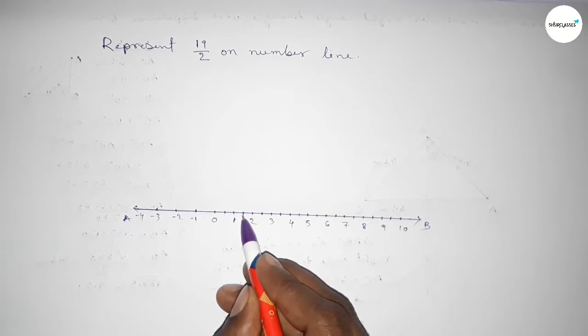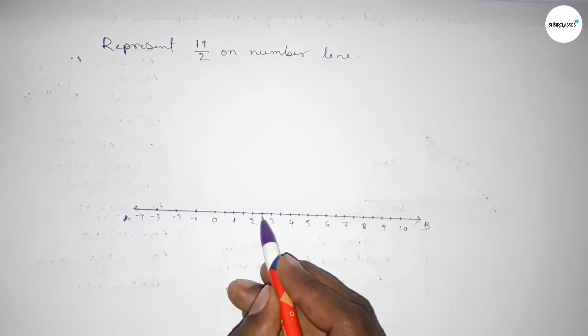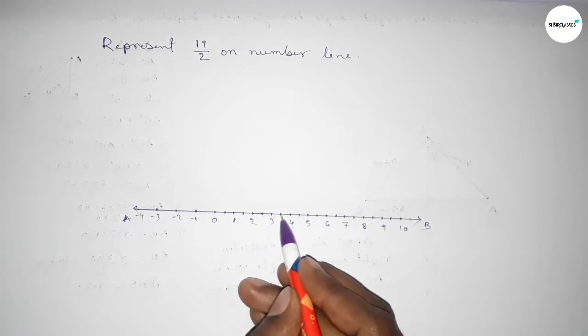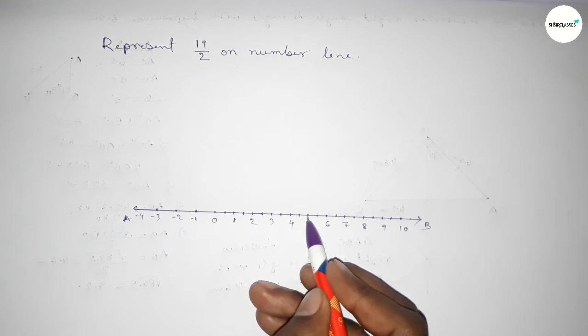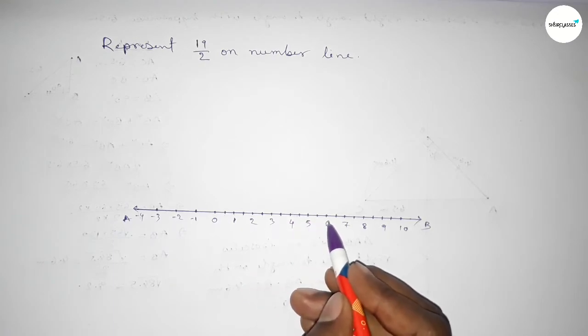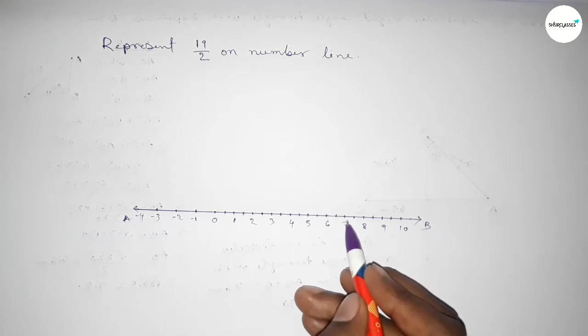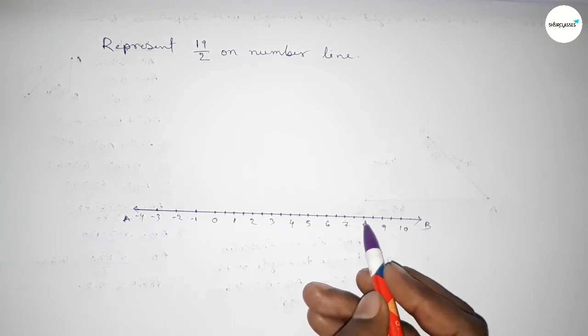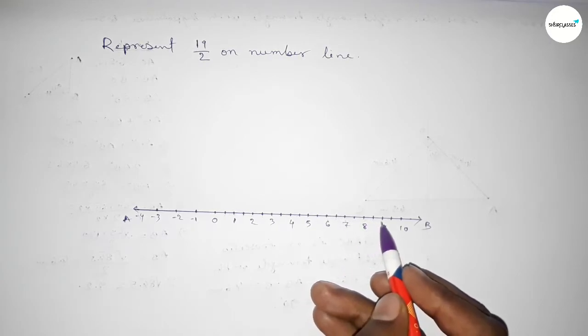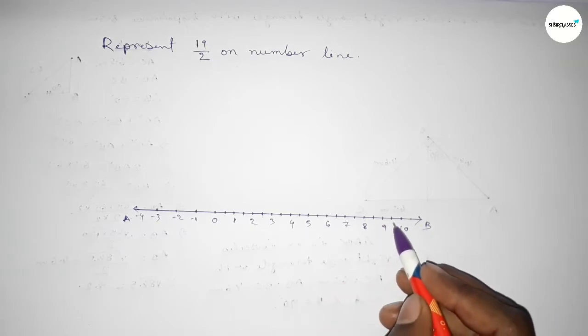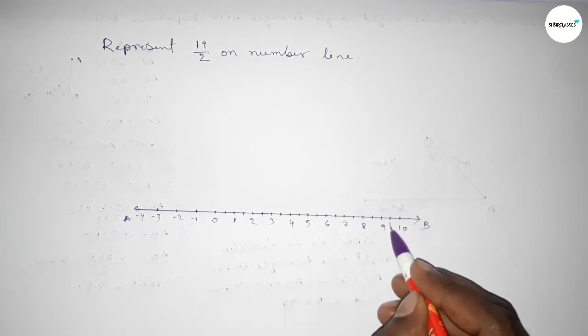9 over 2, 10 over 2, 11 over 2, 12 over 2, 13 over 2, 14 over 2, 15 over 2, 16 over 2, 17 over 2, 18 over 2, and this is 19 over 2.